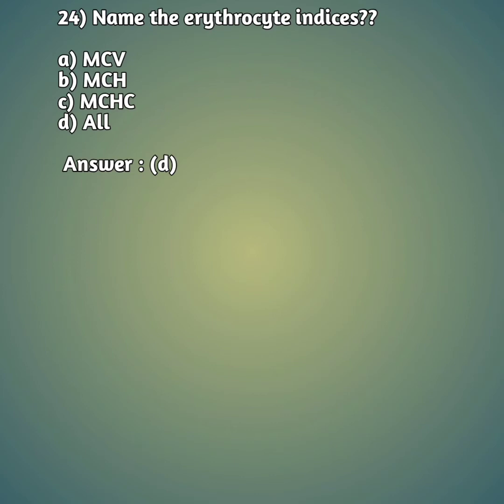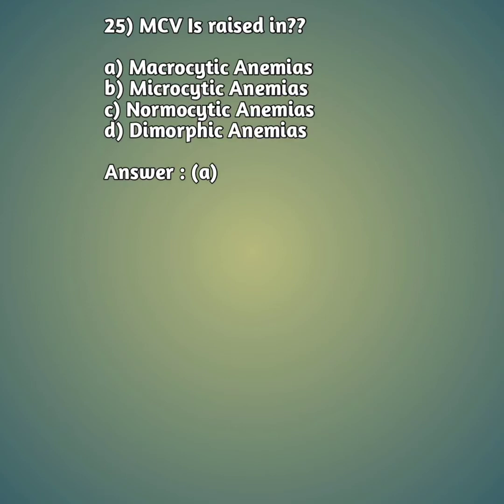Question 25: MCV is raised in — option A: macrocytic anemia, option B: microcytic anemia, option C: normocytic anemia, option D: dimorphic anemia. The right answer is option A, macrocytic anemia. We will discuss these types of anemia in detail in upcoming lectures. MCV is raised in macrocytic anemia.